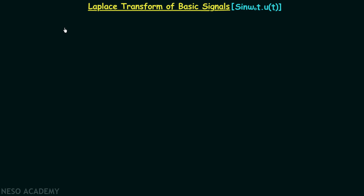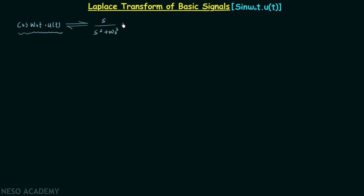In the previous lecture we calculated the Laplace transform and region of convergence of the time domain signal cos(ω₀t)·u(t). The Laplace transform is s over s² plus ω₀², and we found the region of convergence is σ greater than zero.